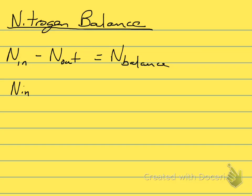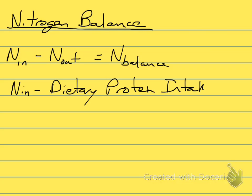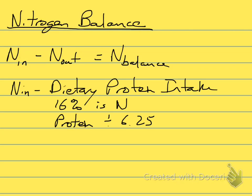Nitrogen N is basically your dietary protein intake, but we have to convert the protein into nitrogen, and 16% of the weight of that protein is nitrogen. So you're going to take your dietary protein and divide it by 6.25. Dividing by 6.25 is the same thing as multiplying by 16%, so you can do it either way — multiply the protein you take in by 16% or divide by 6.25, and you will get the same answer.